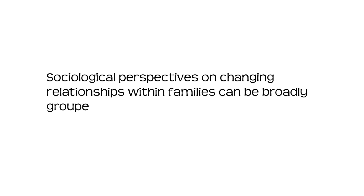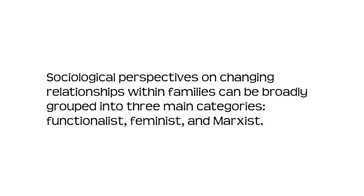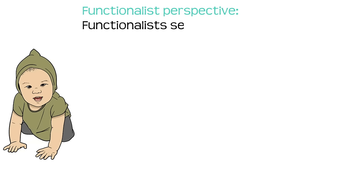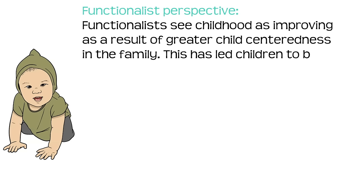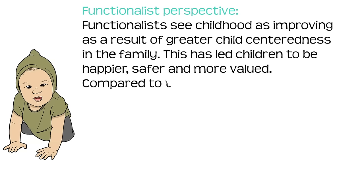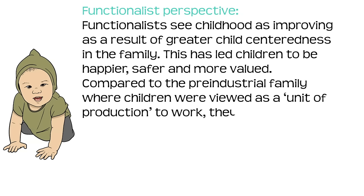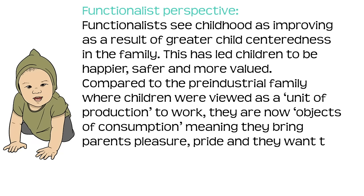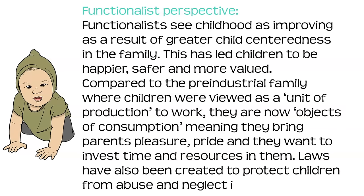Sociological perspectives on changing relationships within families can be broadly grouped into three main categories: functionalist, feminist and Marxist. The functionalist perspective: functionalists see childhood as improving as a result of greater child-centredness in the family. This has led children to be happier, safer and more valued. Compared to the pre-industrial family where children were viewed as a unit of production to work, they are now objects of consumption — meaning they bring parents pleasure, pride, and parents want to invest time and resources in them. Laws have also been created to protect children from abuse and neglect in the family.